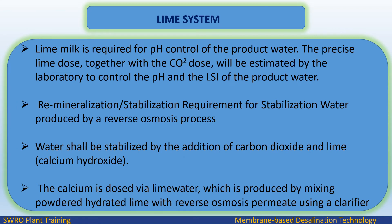The lime system provides lime milk required for pH control of the product water. The precise lime dose, together with the CO2 dose, is estimated by the laboratory to control the pH and the Langelier Saturation Index (LSI) of the product water. For stabilization, water produced by reverse osmosis is stabilized by the addition of carbon dioxide and lime (calcium hydroxide). The calcium is dosed via limewater using a clarifier in reverse osmosis permeate.